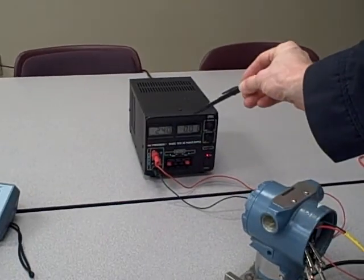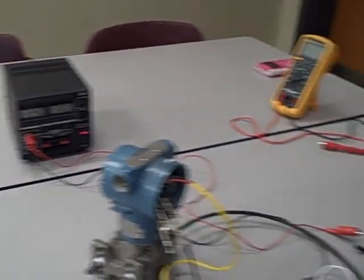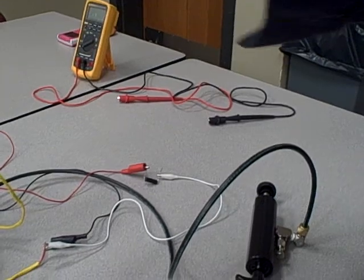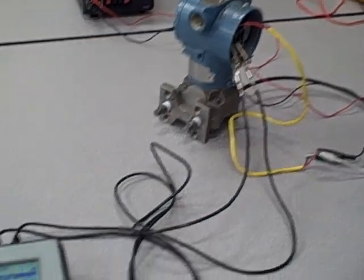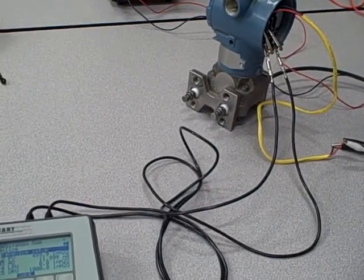We're powering it through a 24 volt power supply, through a 250 ohm resistor, right to the transmitter. And currently we have the communicator connected in parallel with the transmitter. This is the most standard method of connecting the communicator, directly in parallel with the transmitter terminals.